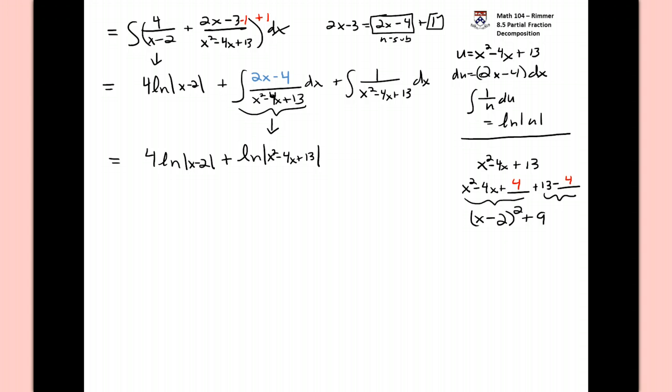In order to make this a perfect square, the relationship is that you take half of this coefficient on x, and so that would be a 2, and then you square that, and that would give you a 4. And so it would be so nice if we had a 4 in there, because then we'd have this perfect square. Well, we add this 4 but then we take away the 4. And so what that gives us then is 13 minus 4 which is a 9. And so then this integral will become the integral of 1 over the quantity x minus 2 squared plus 9.